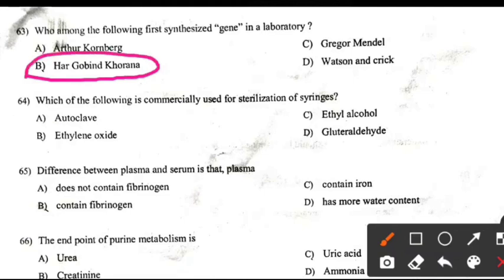Which of the following is a material used for sterilization of syringes? Right answer B: Ethylene oxide.